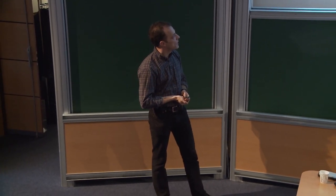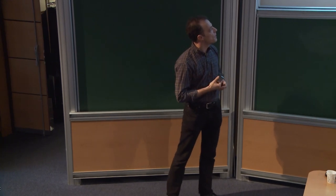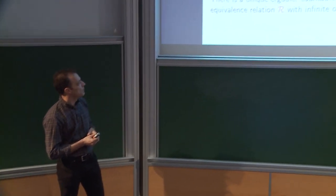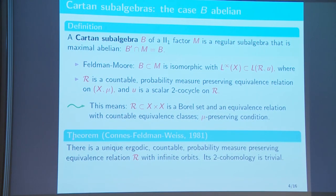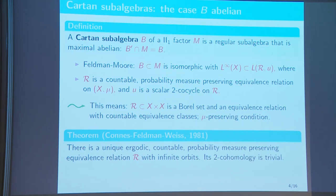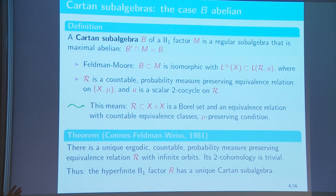The second fundamental theorem is a uniqueness theorem by Connes, Feldman, and Weiss, saying that if you restrict to the amenable world, there is a unique ergodic amenable countable probability-measure-preserving equivalence relation. In the amenable case there is again a unique object R. Not only is there a unique one, but it has no 2-cohomology — the 2-cocycle is automatically a coboundary. So there is only one equivalence relation that can appear. Conclusion: the hyperfinite II₁ factor has a unique Cartan subalgebra, up to arbitrary automorphisms of the algebra.